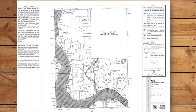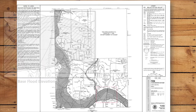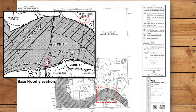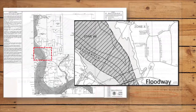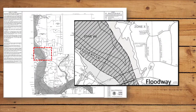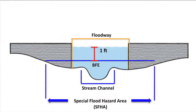FIRMs based on detailed study methods include several additional features. The base flood elevation is displayed in whole number increments along the detailed stream reach. The floodway is that portion of the floodplain, including the stream channel, that is reasonably required to carry the base flood event so that restricting the flow will not result in a significant increase in flood stage.